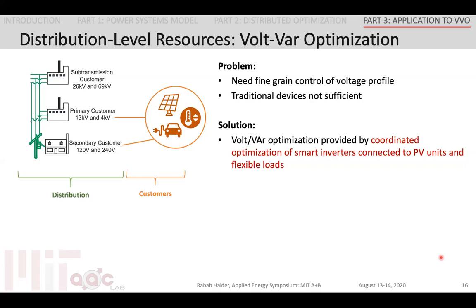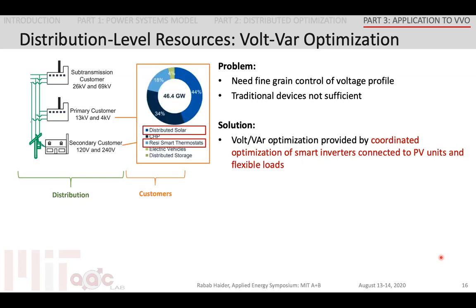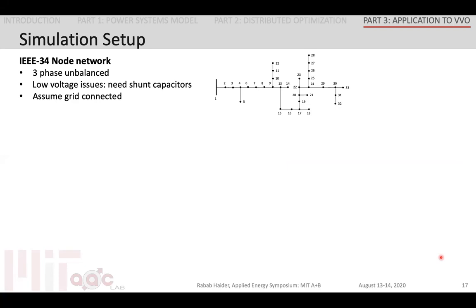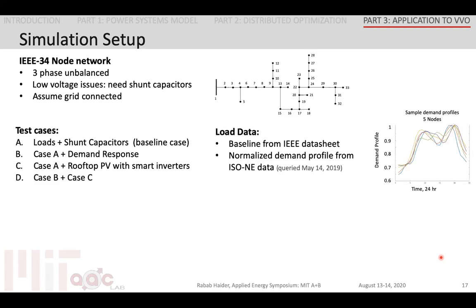With these two tools in our toolbox, we can now solve the Volt-VAR optimization problem by looking at the coordination of PV smart inverters and flexible loads, including smart thermostats and distributed solar. We carried out VVO on the IEEE 34 node network, which has low voltage issues even though there are shunt capacitors in the network. We then run different test cases with varying penetration of DERs. Case B looks at the baseline with demand response. Case C looks at the baseline with additional PV and smart inverters with variable power factor. Case D tests the limits by looking at both of these resources together. We use load data from New England to generate demand profiles for each node in the network.